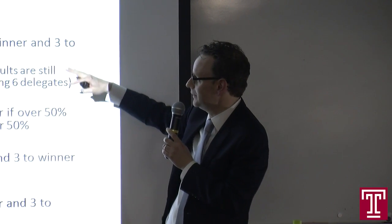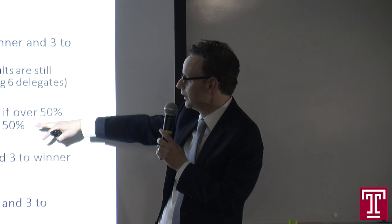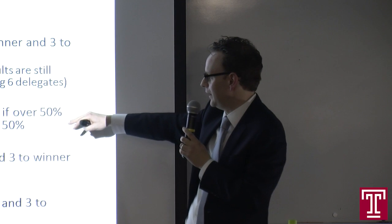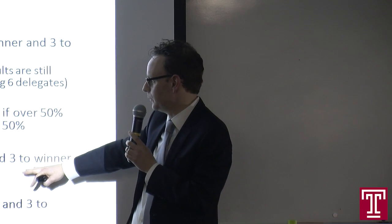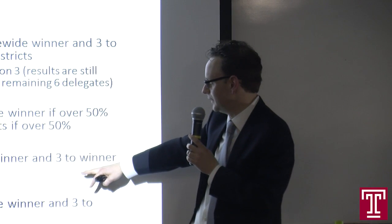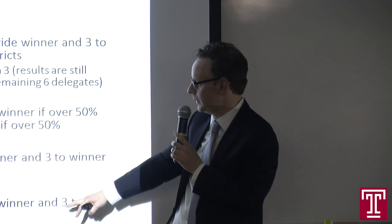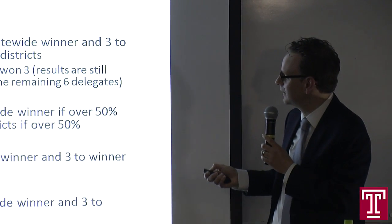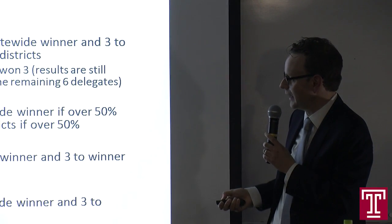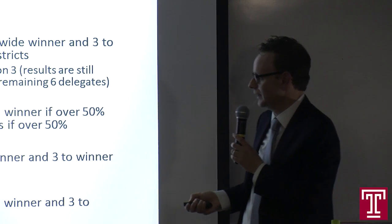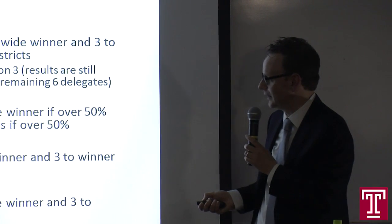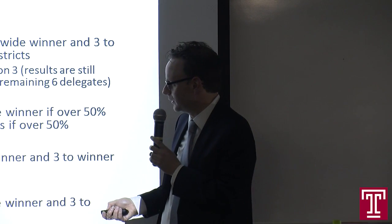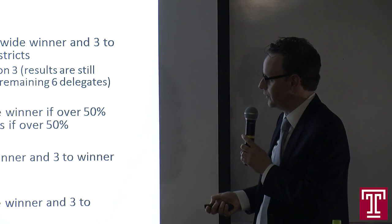Key upcoming states include New York with 95 delegates and varying winner-take-all rules, and Indiana with winner-take-all for the statewide winner plus delegates per congressional district. Most observers think we won't know the answer until at least June 7, when California — with 172 delegates, a huge number — and a few other states vote.